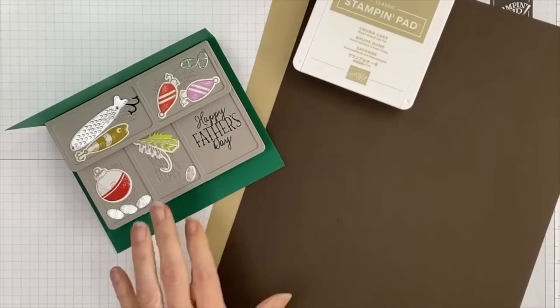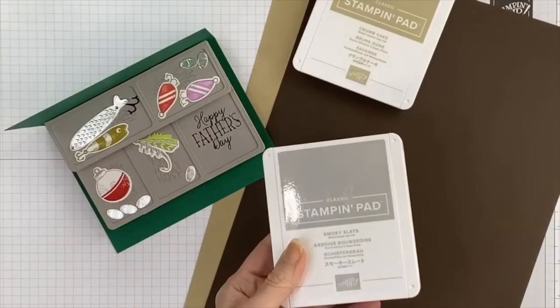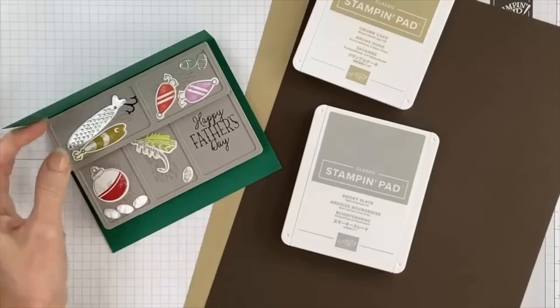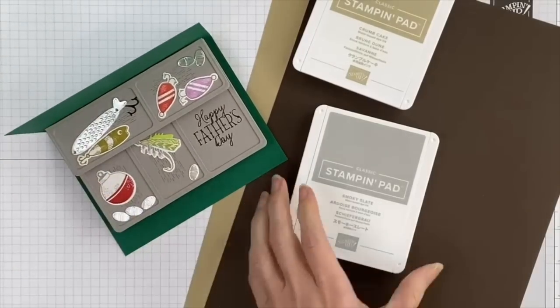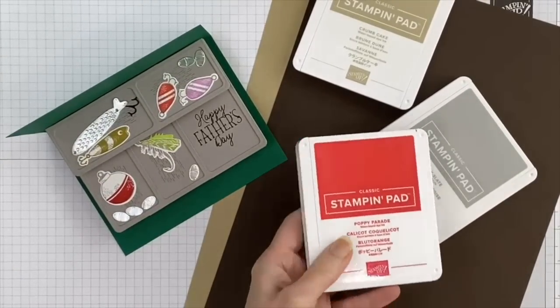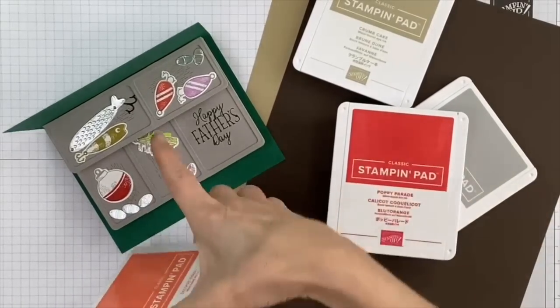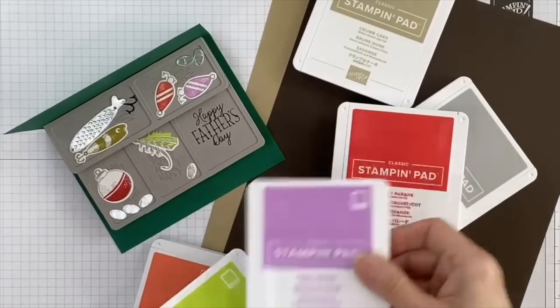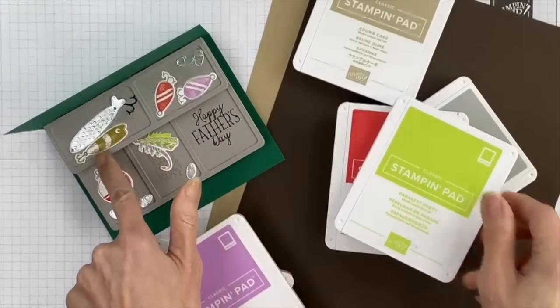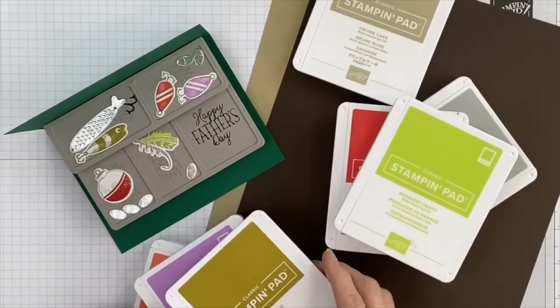You can also personalize the tackle, the color of the tackle that's in the box. I've used Smoky Slate for my silverish color on all of my basic white lures in here, but you can change it to a different color. Poppy Parade is this red here. I've used Calypso Coral for that little spoon. I've used Fresh Freesia for this one. Parakeet Party is this green, and then I use Wild Wheat for this one that has more of a goldish tone to it.